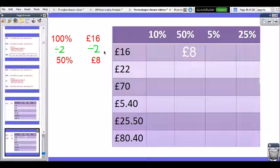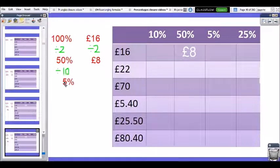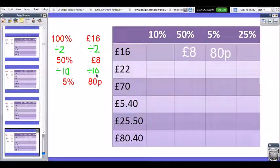So where can I go from here? Well, if I know what 50% is, how do I get from 50% to 5%? What calculation takes me from 50 to 5? Well, if I divide 50 by 10, that gives me 5%. So if I divide £8 by 10 to get 80p, that gives me 5% of £16.